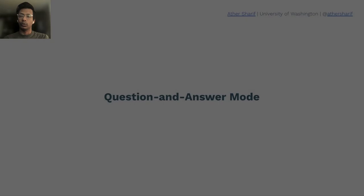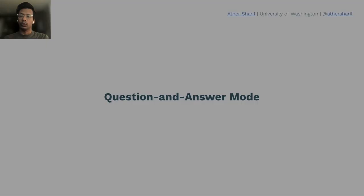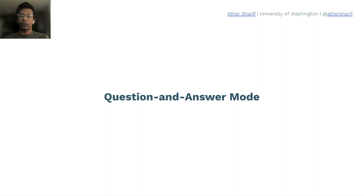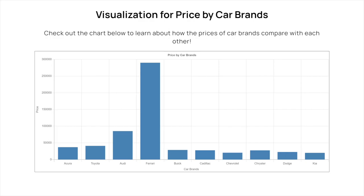The first mode was the question and answer mode, where users were able to verbally interact with the visualization. In a sample interaction, a user asks 'What is the maximum?' and VoxLens responds: 'Maximum value of price for car brands is $290,000 belonging to Ferrari.' The user then asks 'Tell me the mean, minimum, and standard deviation,' and VoxLens responds with the average of $60,000, minimum of $20,000 belonging to Kia, and standard deviation of $78,800.